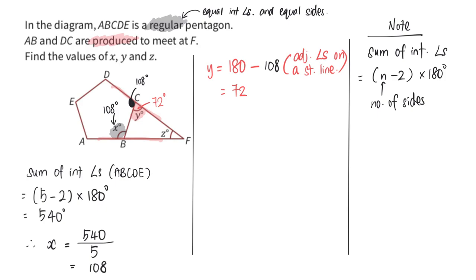Last but not least, do take note that angle x is actually the exterior angle of this triangle. And so, angle x is simply angle y, y degrees plus z degrees.